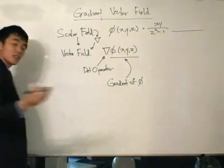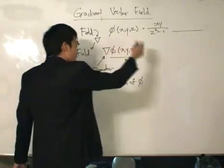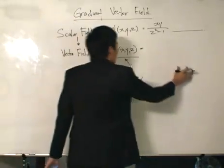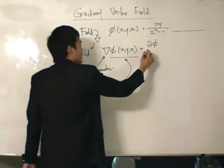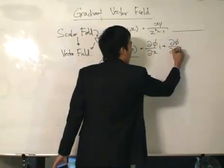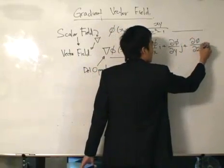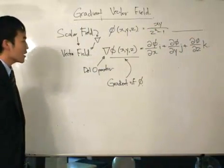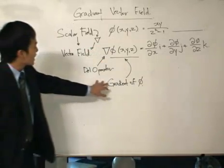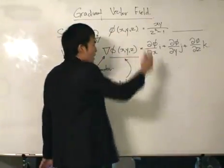I can't tell you the physical interpretation right now, but we'll know in the future. So the del operator, applied to the scalar field, gives us the gradient of phi which is now a vector field. This turns out to be a vector with i, j, k components: the partial derivative of phi with respect to x as the i component, partial derivative of phi with respect to y as the j component, and partial derivative of phi with respect to z as the k component.